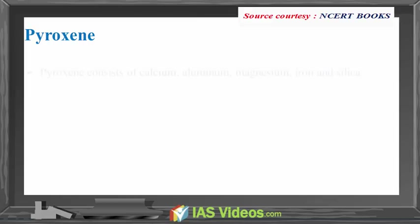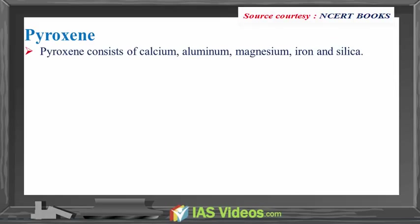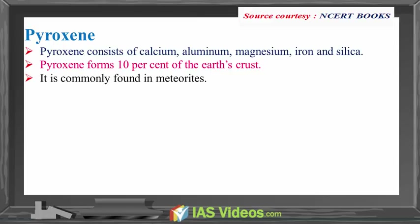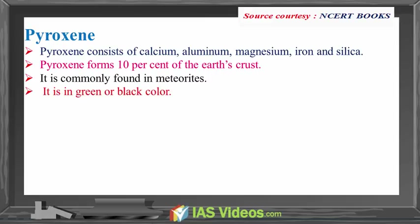Pyroxene: pyroxene consists of calcium, aluminum, magnesium, iron and silica. Pyroxene forms 10% of the earth's crust. It is commonly found in meteoroids. It is green or black in color.